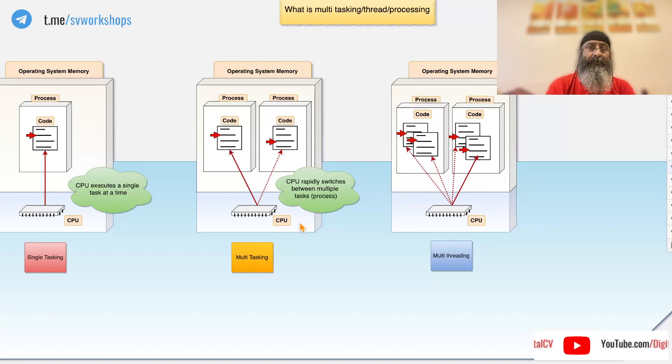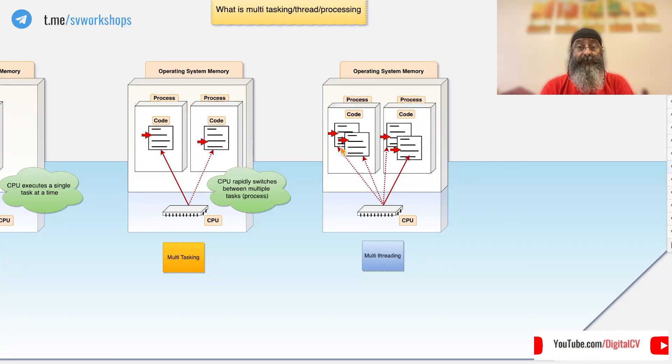While he is taking order from one table, he is going to the kitchen, coming back and serving dish to the next one and coming back to the previous table to probably give some water or spoons and he will keep switching between these tables which will go on fine until there are too many tables. So what is multi-threading?